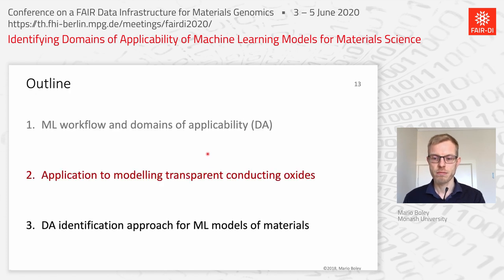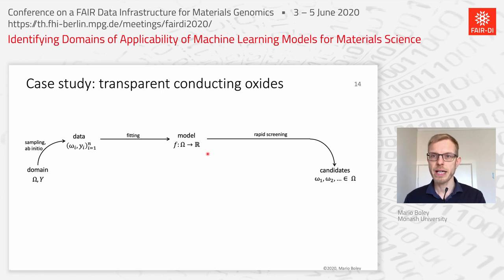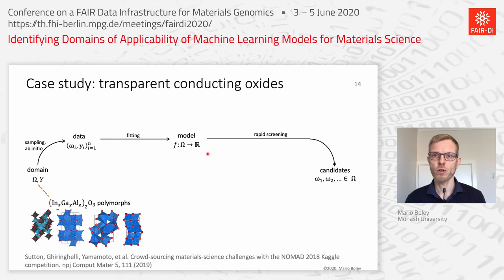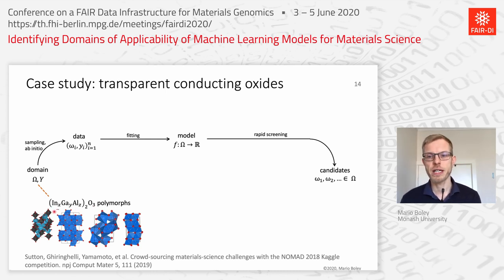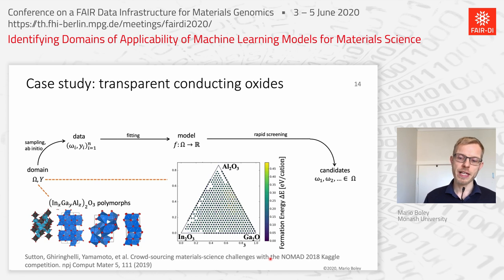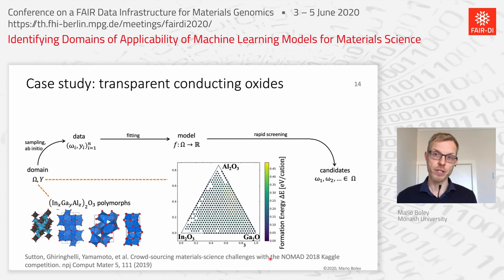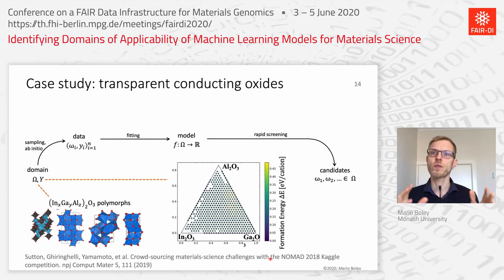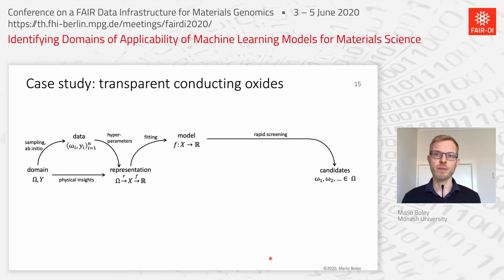Let me introduce a case study to illustrate this more concretely. We investigate discovering novel transparent conducting oxides — specifically a population of indium gallium aluminum oxides screened across six different space groups, where we want to understand the formation energy of different polymorphs. This problem is taken from a 2018 Kaggle open machine learning competition, which is useful because a number of machine learning approaches have been systematically tried and optimized for this dataset.